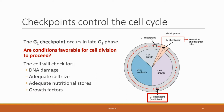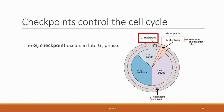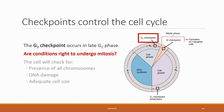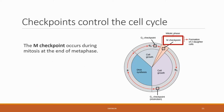Cells that fail the checkpoint will be diverted into the G0 phase in which they stay dormant. Cells will either eventually succeed where they can pass the checkpoint, lie dormant, and possibly never divide at all. The G2 checkpoint occurs in late G2 phase — the cell will confirm if conditions are right to undergo mitosis. Since this is past the S phase and at the end of G2, the cell will check for the presence of all chromosomes, DNA damage, and adequate cell size.